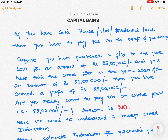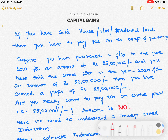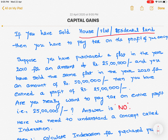Hello, today we will discuss an important concept that everybody wants to know — capital gains. What is capital gains? If you have an old property, either a residential flat or house, and you have sold that property, then you will get some profit. On that profit, you have to pay tax. Today we will discuss how to calculate the tax and whether there are any exemptions.